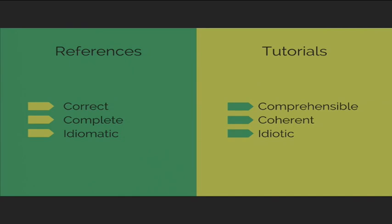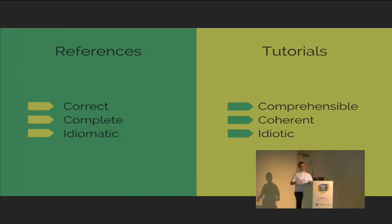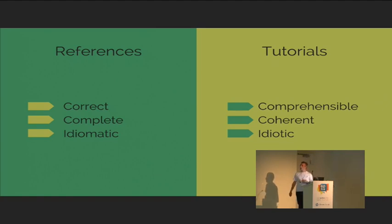I tried to identify what I would say as a reference versus a tutorial. In a reference, you try to be very correct — every single thing should be correct, nothing wrong. Also, a reference tries to be complete; I can understand why the Python tutorial talked about strings in depth — it was trying to examine strings and tell you everything: they're immutable, you can slice and dice them, count their length. And most Python references try to be idiomatic, so for loops you'd use the for-range pattern rather than while loops with index variables.